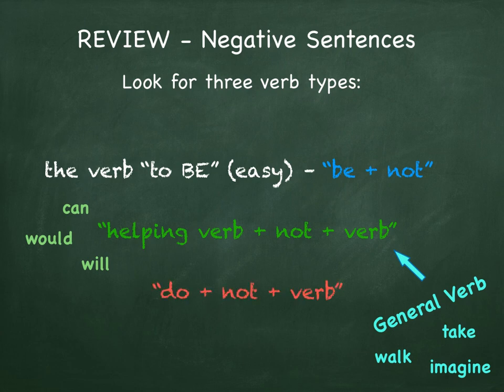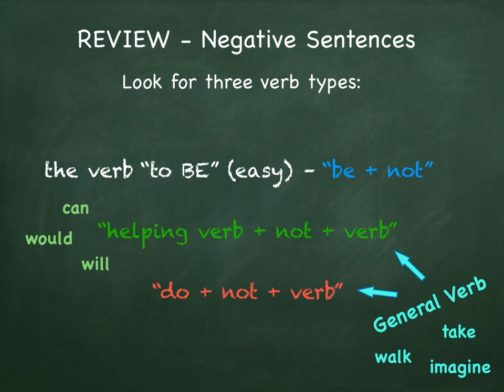The third type is also a general verb but it has no helping verb in a regular sentence. In the negative form, we add the helping verb do. For example, they do not live here, or in natural conversation, they don't live here.